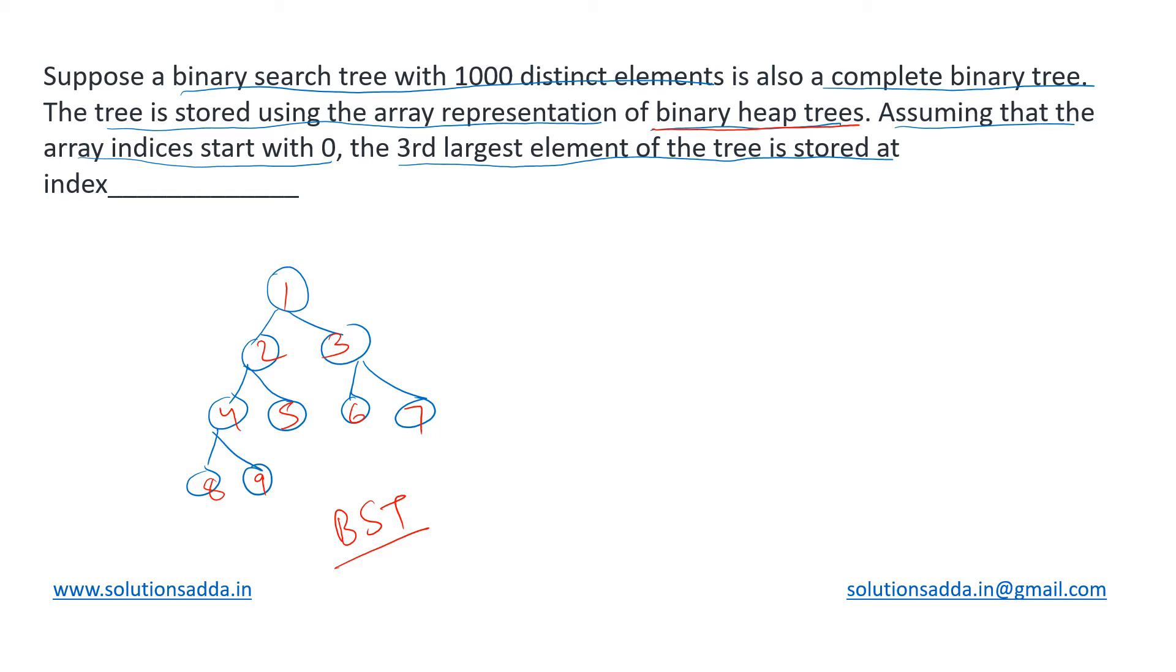Now if this is also a BST, then where will the largest element be stored in this tree? Index 7 will be having the maximum value because that is the rightmost traversal, the last node in that side. So it will be having the maximum value - that is our first maximum element.